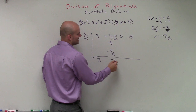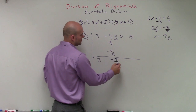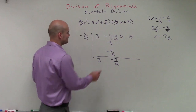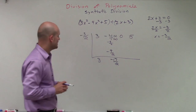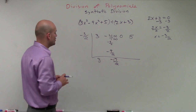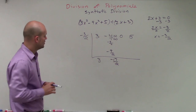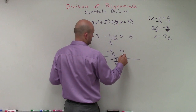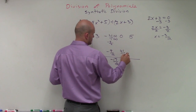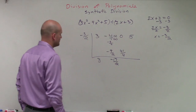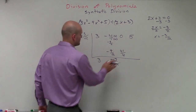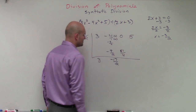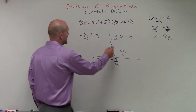So negative 8 over 2 plus negative 9 halves gives negative 17 over 2. Then multiplying across, we get 51 over 4.